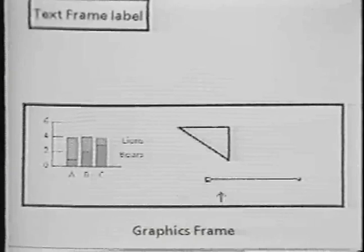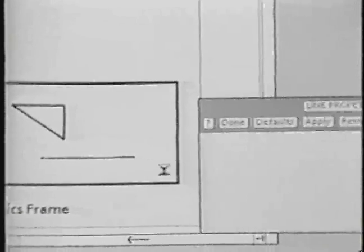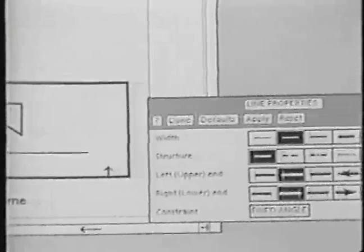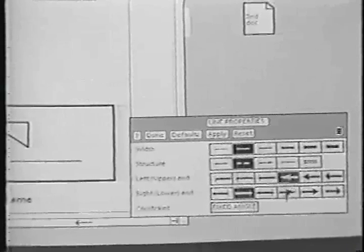Lines also have properties. Properties of lines include width and structure, as well as optional arrowheads at either or both ends.